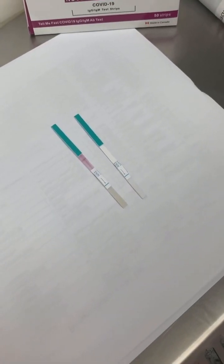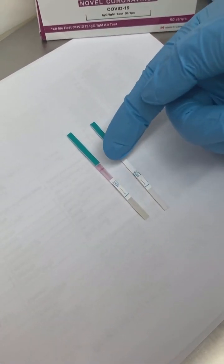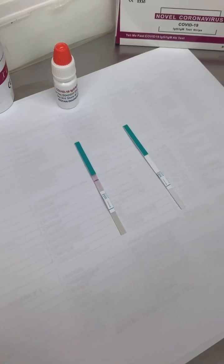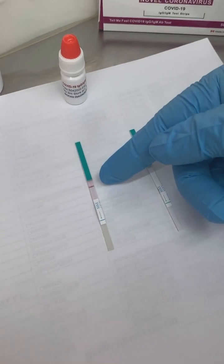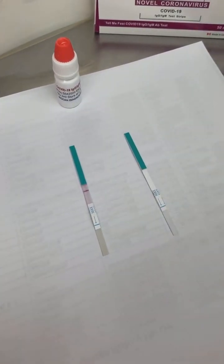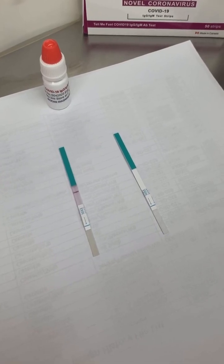As the sample flows through the test strip you can see the appearance of the control line. You can read the results at 10 minutes. One line in the control area indicates a negative test. No COVID-19 IgG-IgM antibodies were detected.